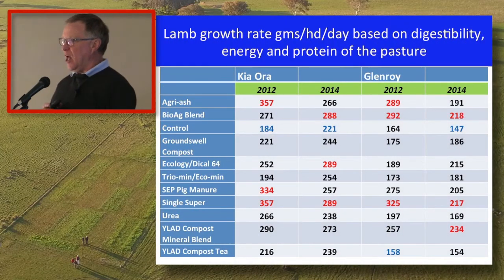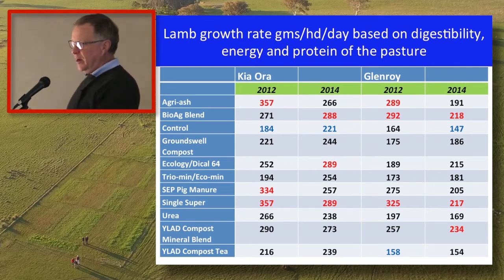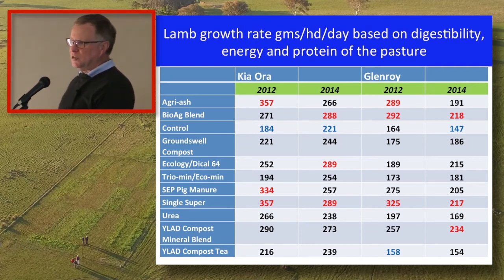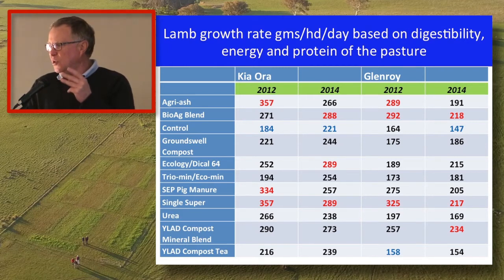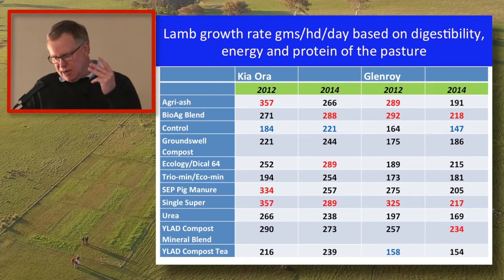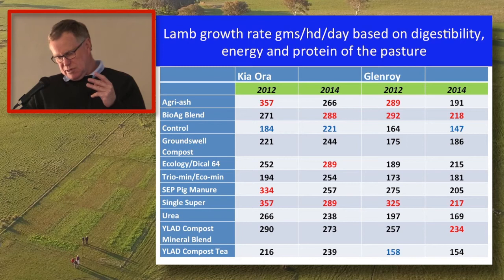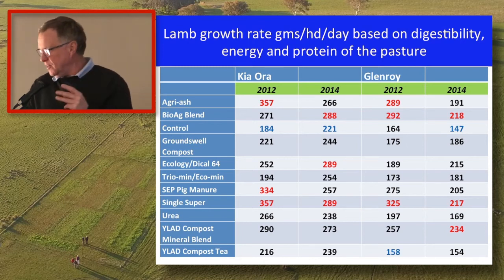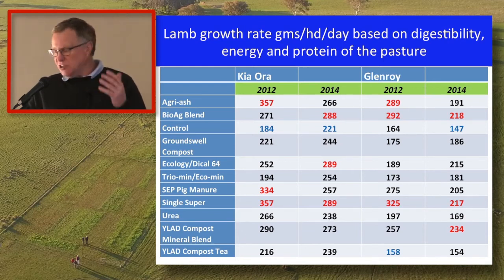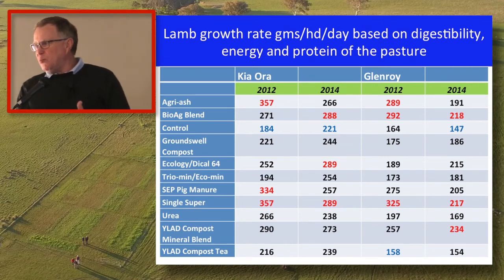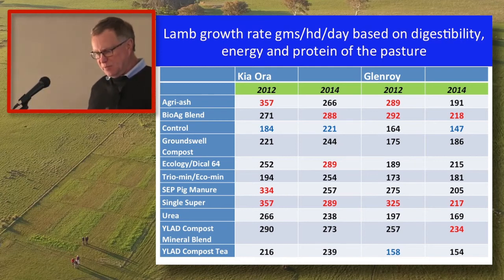The first screen is lamb growth rate in grams per head per day. Products are down the left-hand side, with the two locations — Kiora and Glenroy — and two years each. The three products in red are the three highest growth rates. You'll notice one product has the highest growth rates for all four years, another product appears three times. Once you look, some products never get into the top three. In blue, the control plot had the lowest growth rate in three of the four years — and in one year it was the compost tea. That's showing the range of growth rates and why the numbers differ between years due to energy and protein content.